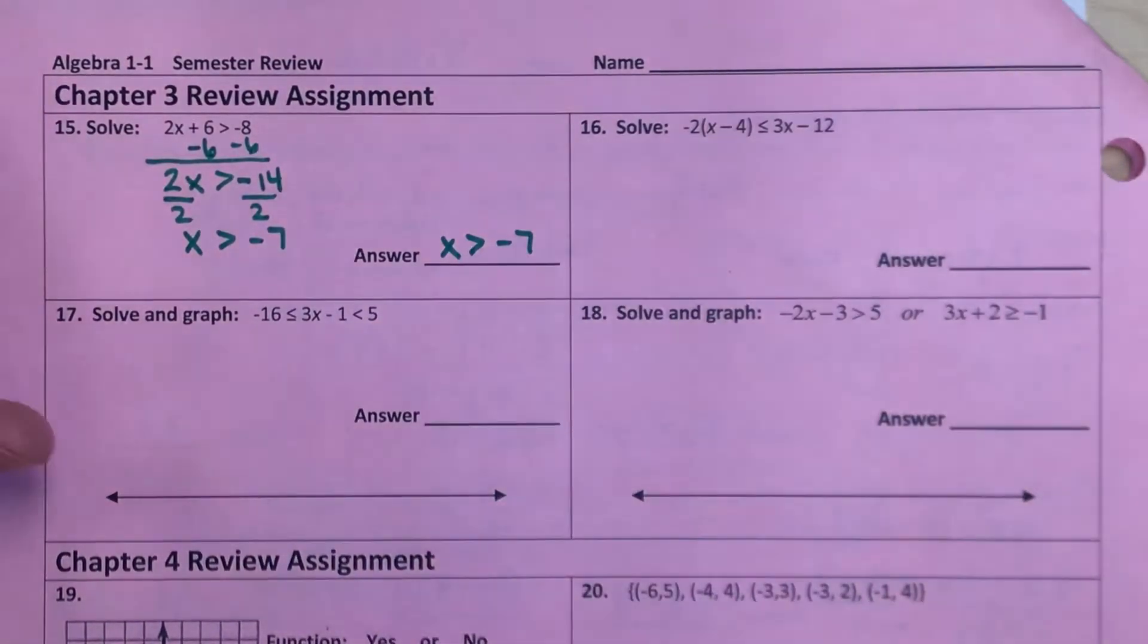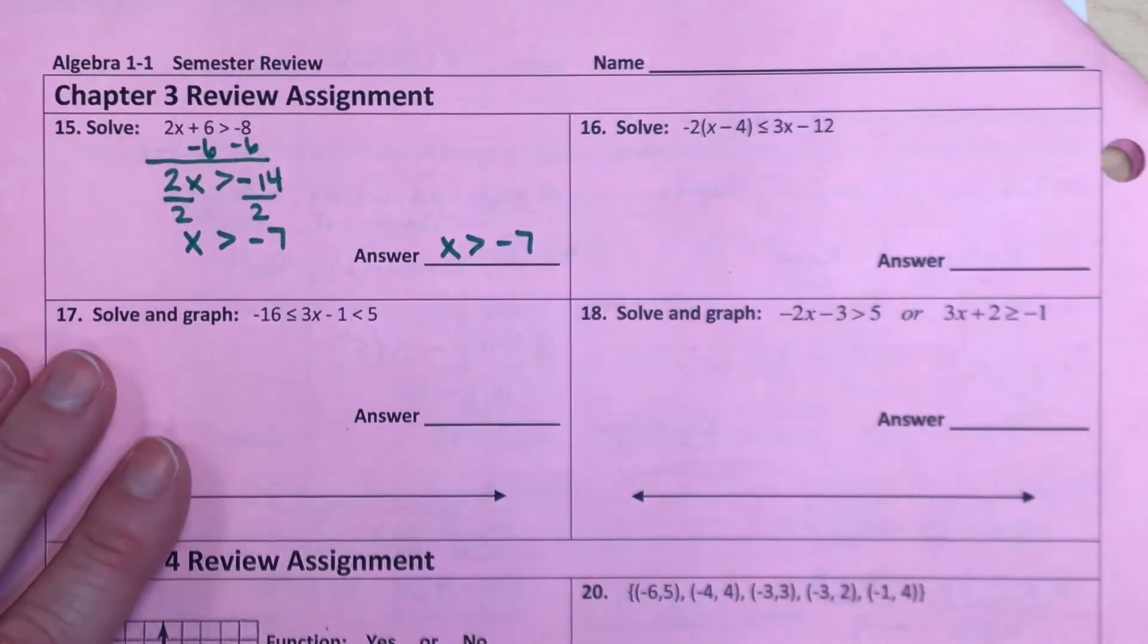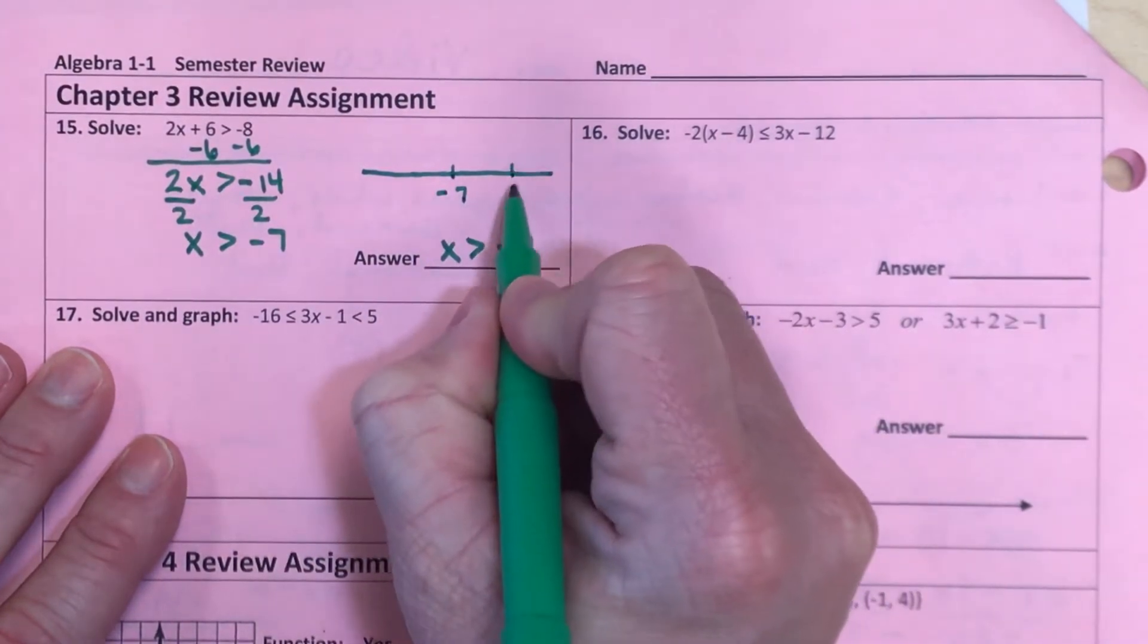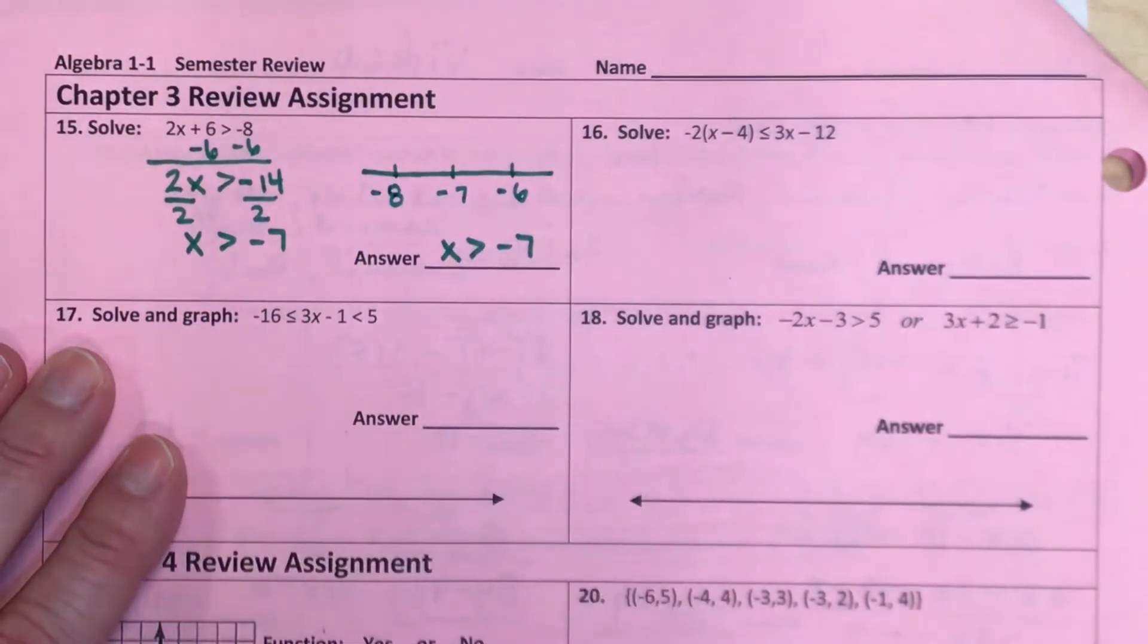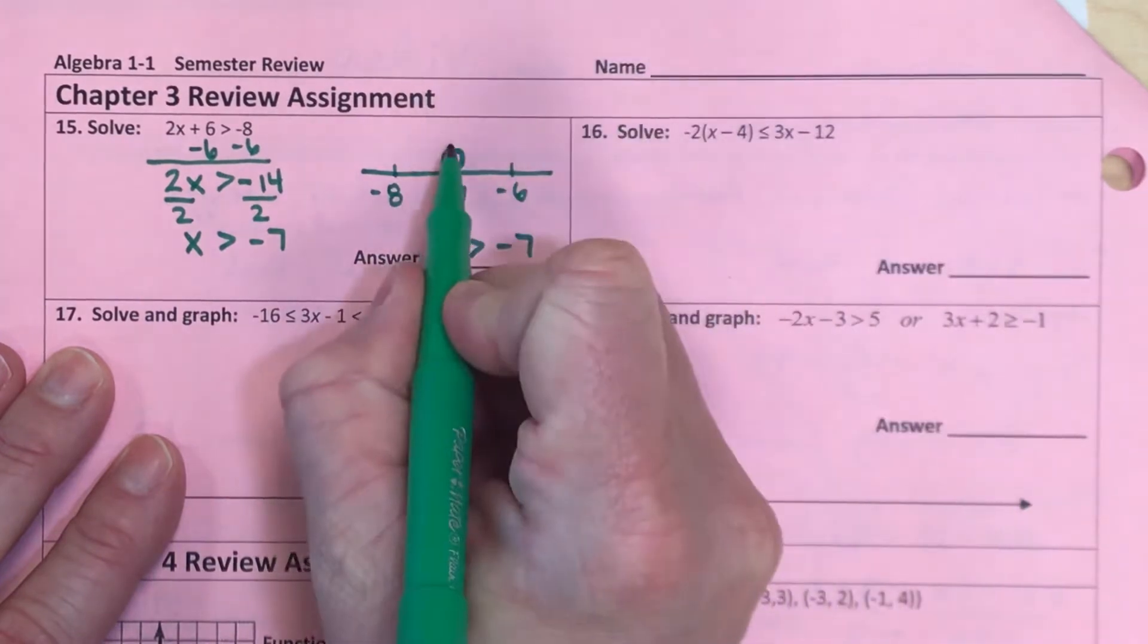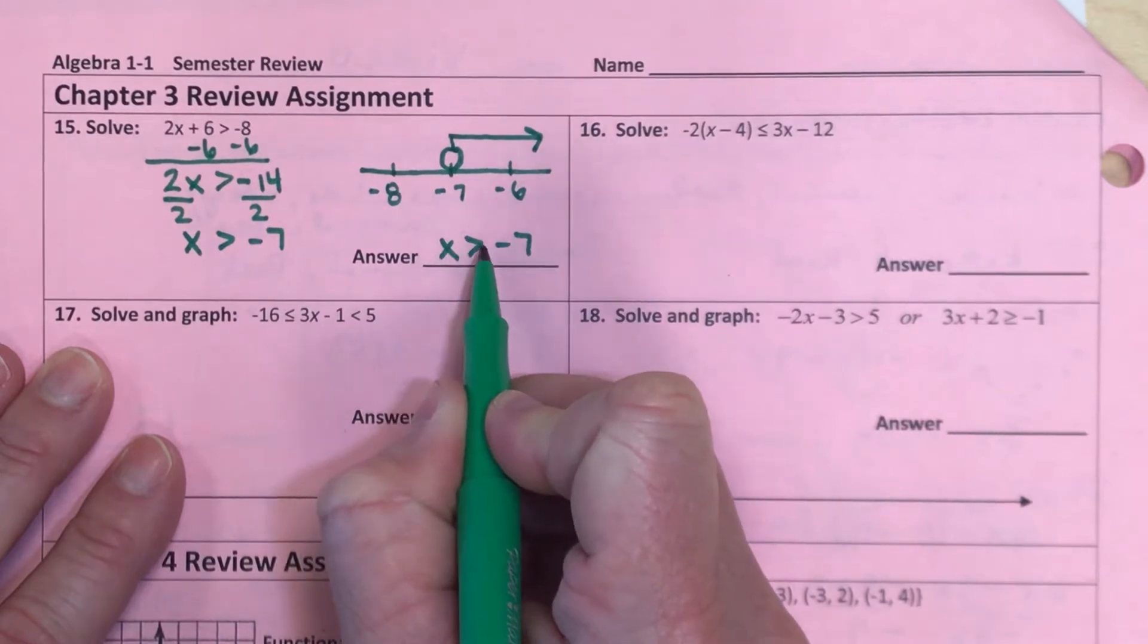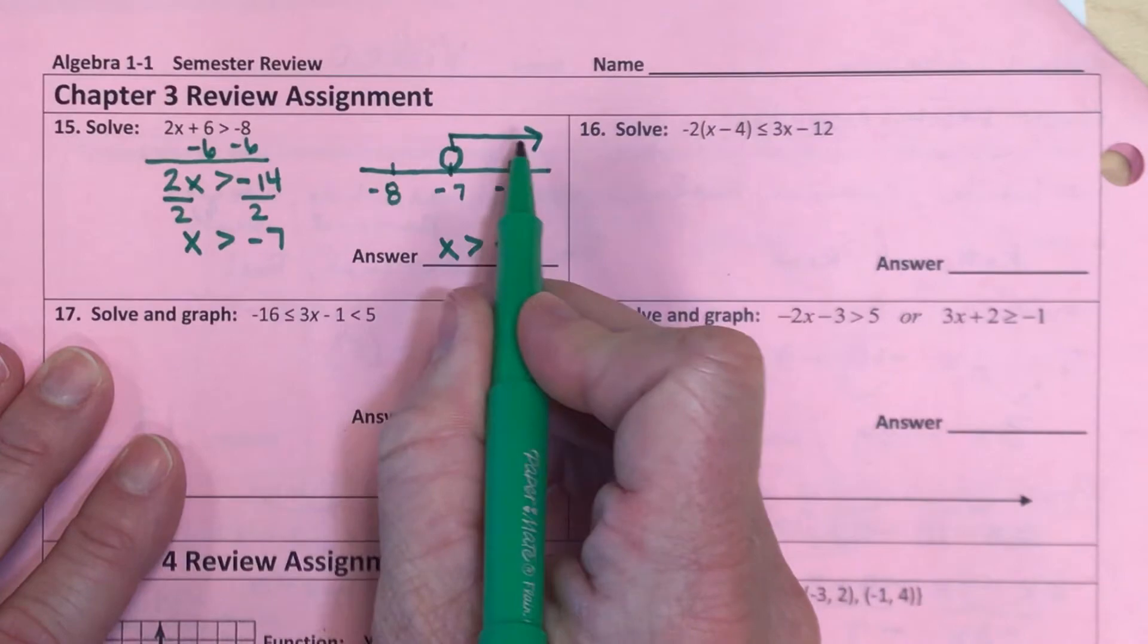Now, it doesn't ask you to graph for this question, but just in case you had to graph on your final exam, it would look something like this. Give yourself a number line, and we want to make sure we mark negative 7. So I'm going to put just a couple other numbers for reference. Now, at negative 7, you're going to have an open circle, and then greater than means we're going to shade to the right. And notice how when the x is on the left side, the arrow points you in the direction that you should go. So in this case, shade to the right.